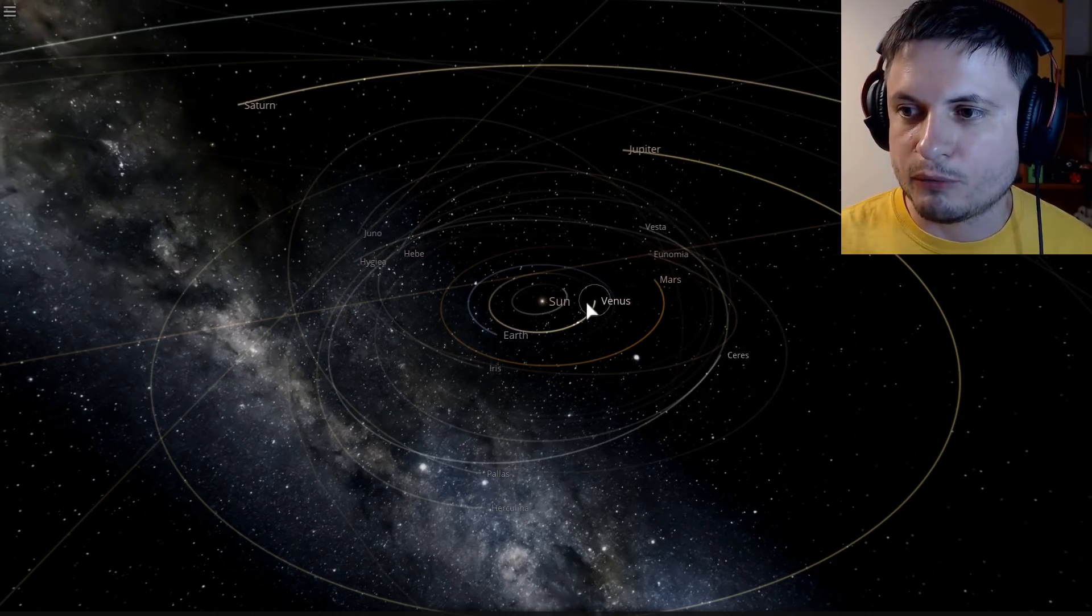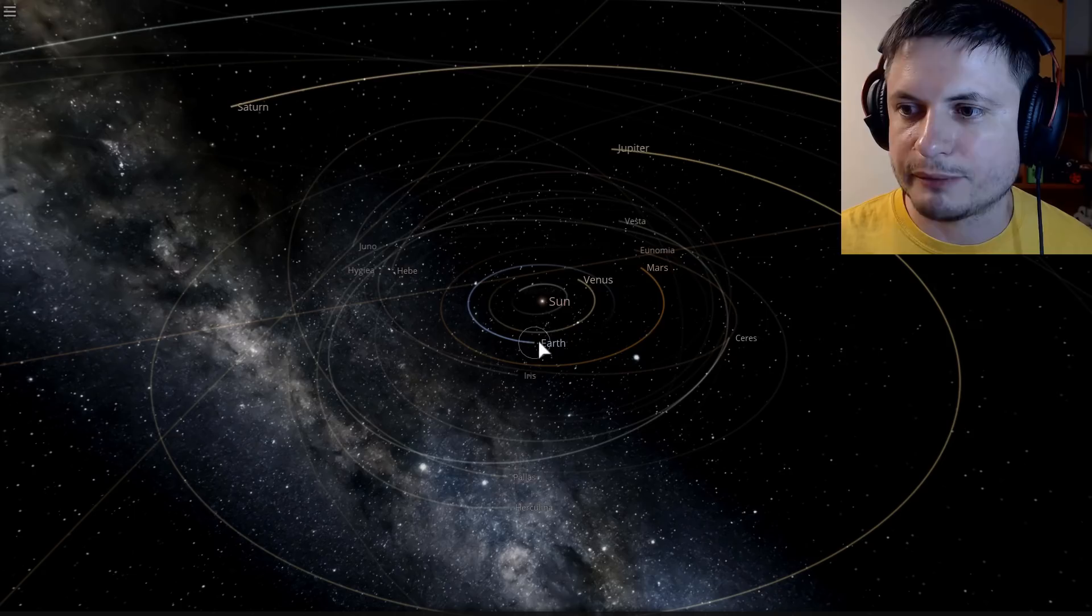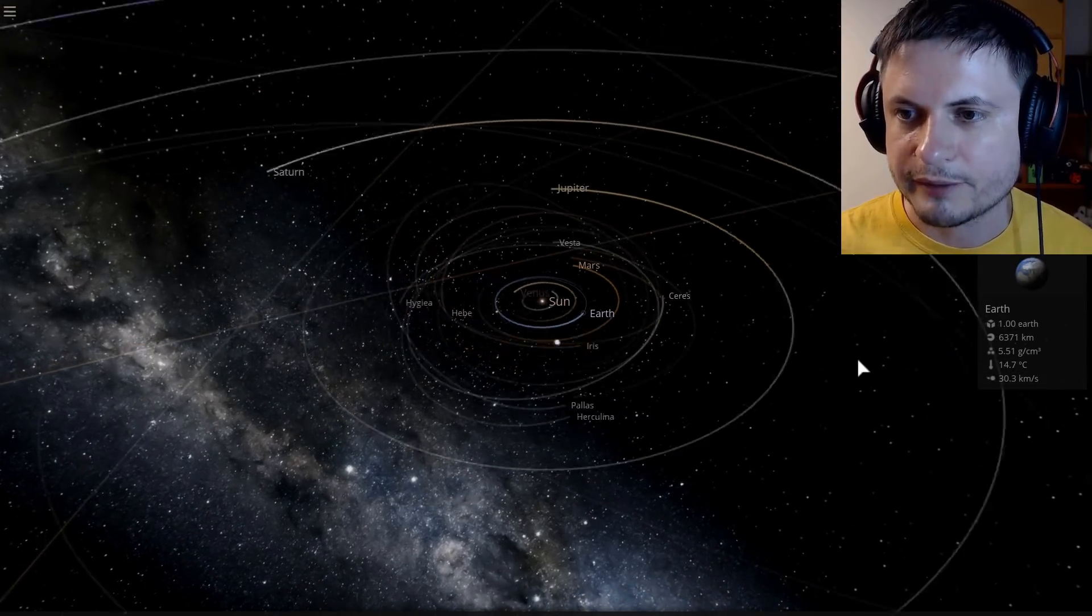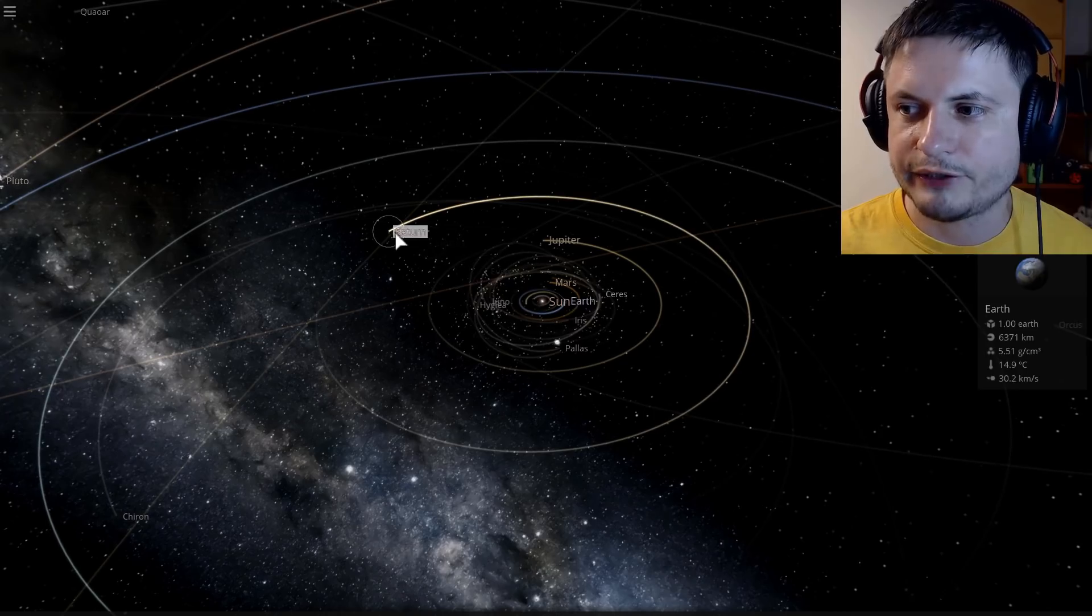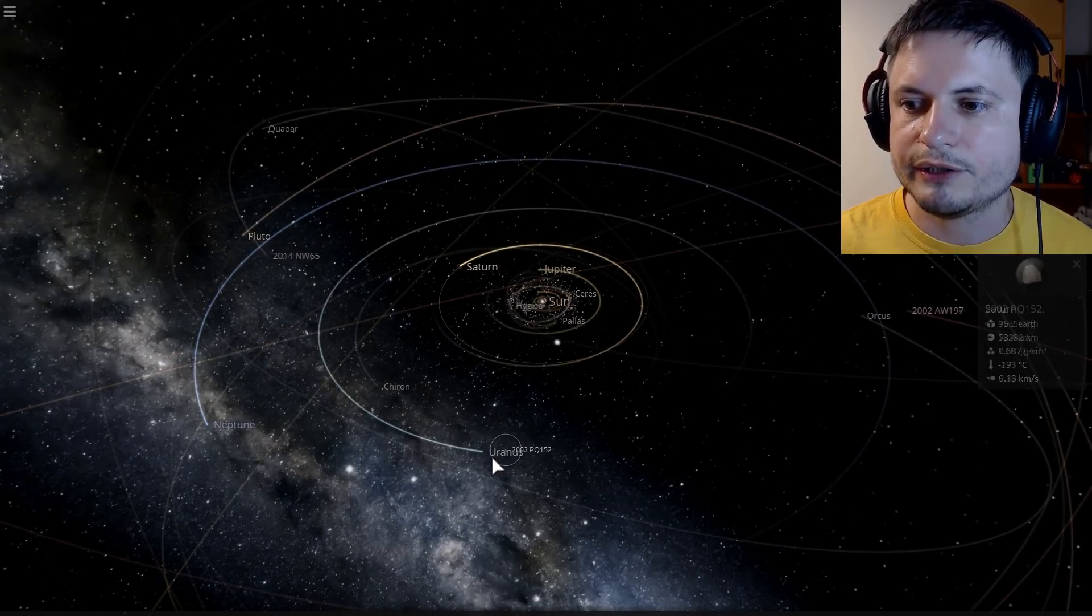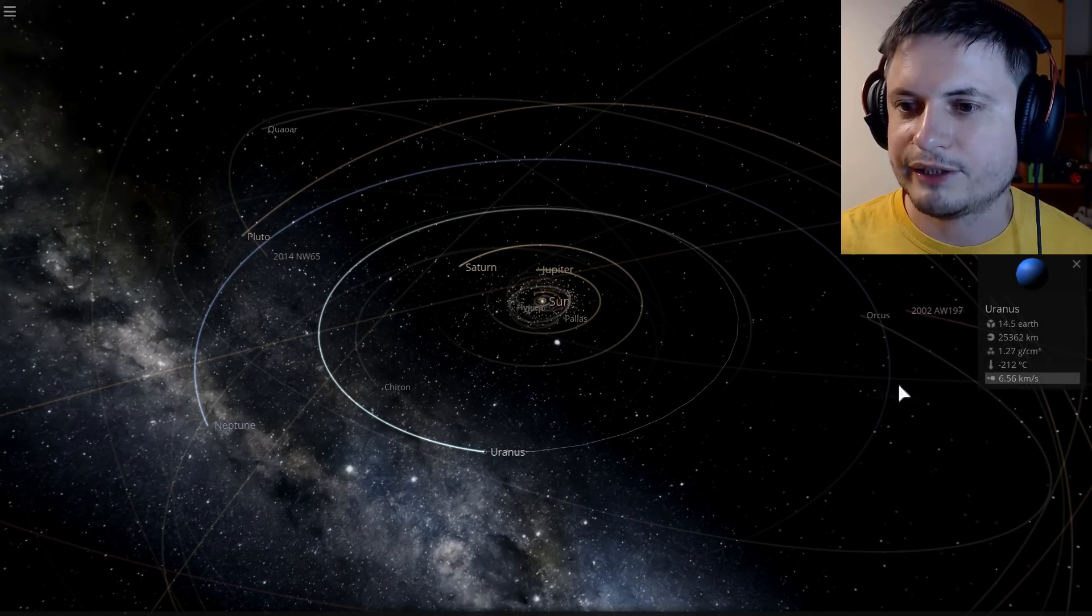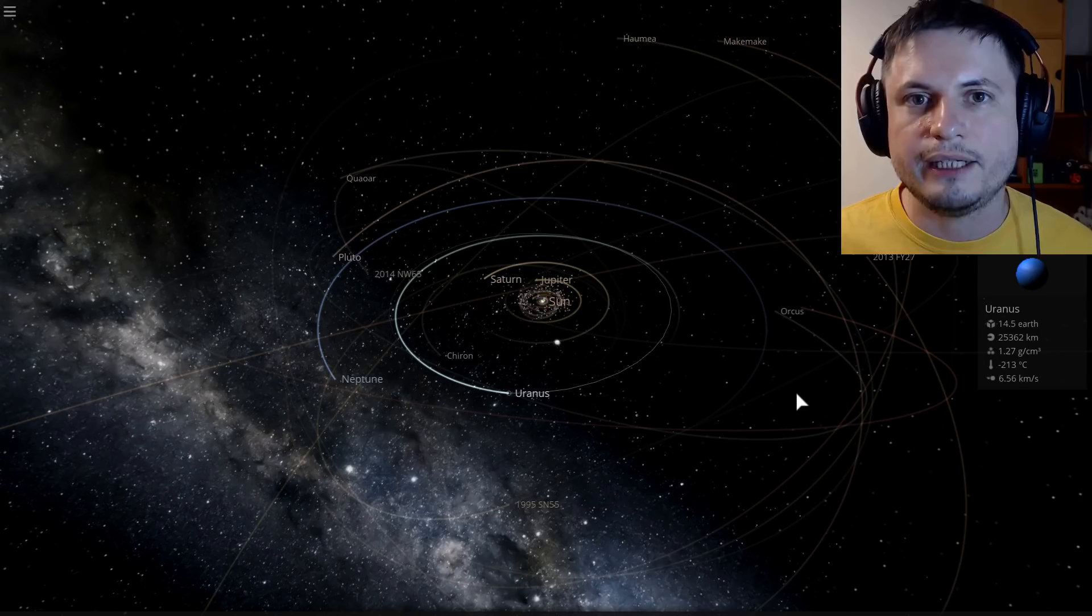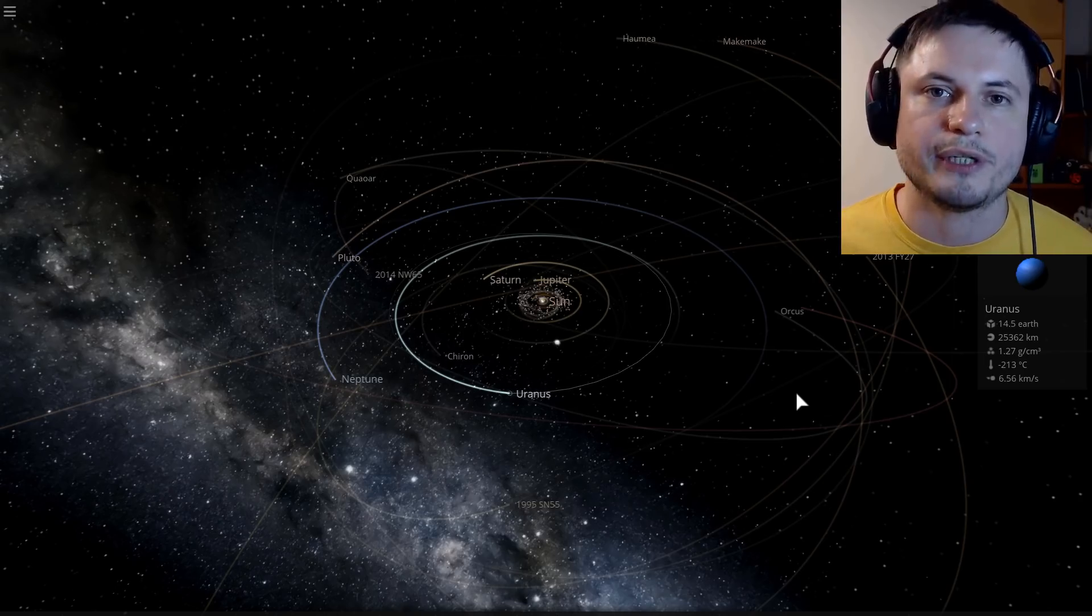So here, when something is close to the Sun, like for example Earth, it would be moving a lot faster, so here the speed is 30 kilometers per second, than something that's farther away like Saturn. Saturn is only moving at about 9 kilometers per second, and Uranus, which is right there, is moving at 6.5 kilometers per second. So the farther away from the center you go, the less orbital speed you get, right?